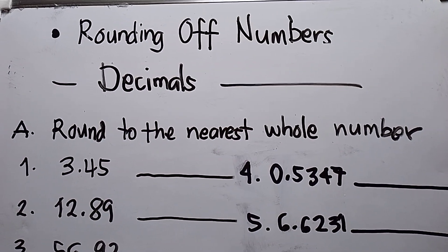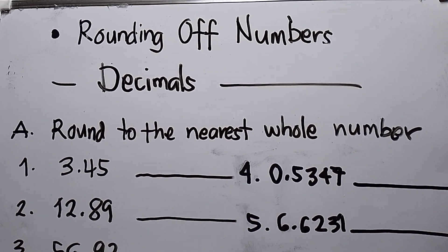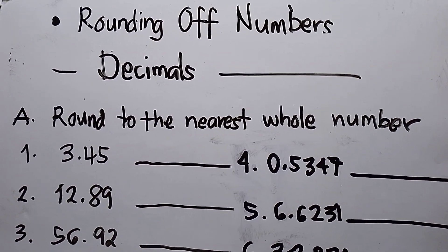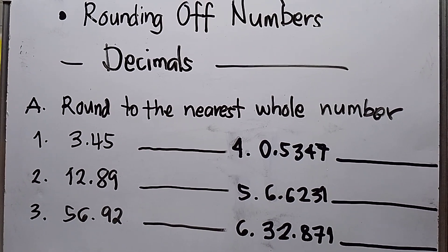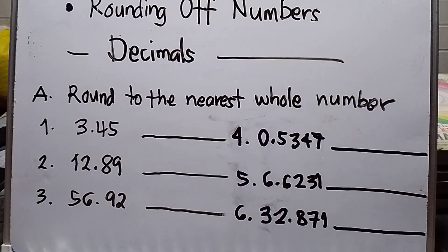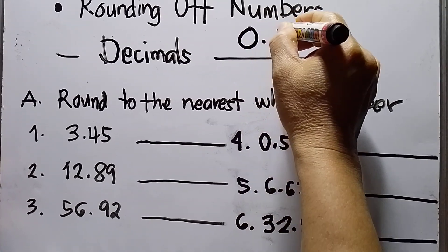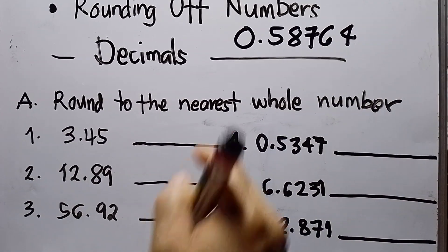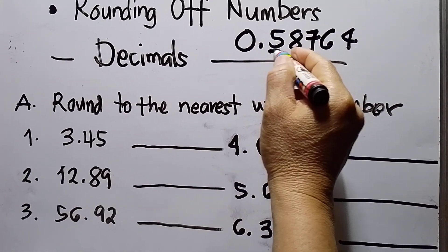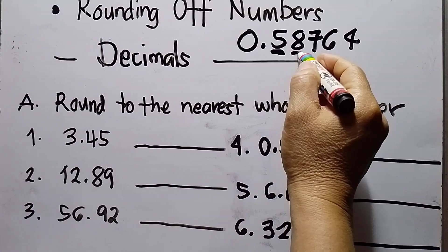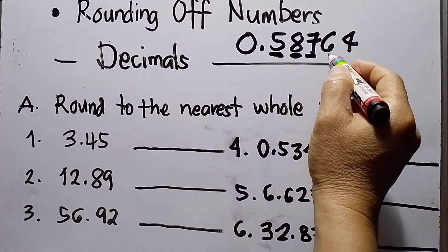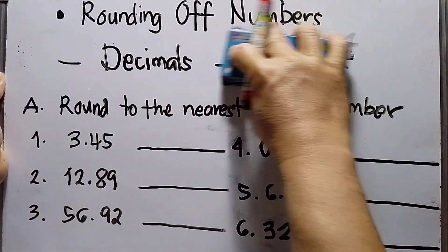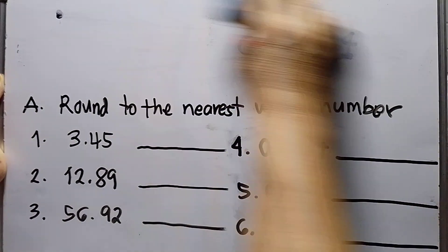Hello to my viewers. My topic today is about rounding of numbers. We have here decimals. I will give you an overview about decimals and the place value. For example, I have here 5, 8, 7, 6, 4. Reading this: the first decimal place is tenths, then hundredths, thousandths, ten-thousandths, and hundred-thousandths.